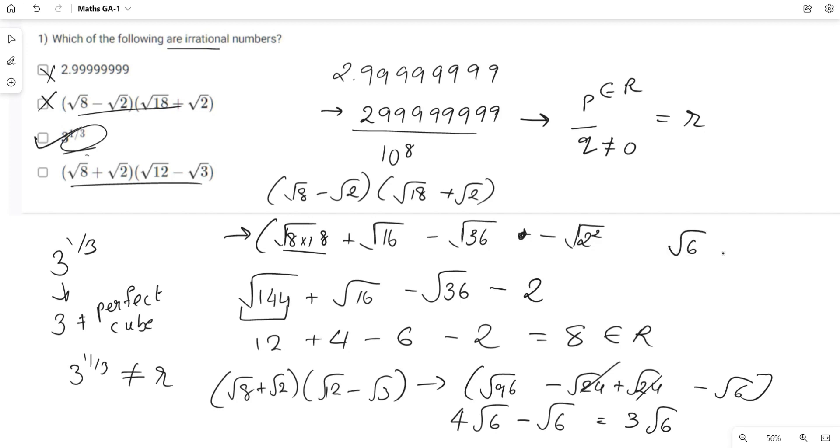We know that root 6 is an irrational number, which implies 3 root 6 is also an irrational number. Hence, c and d are your answer.